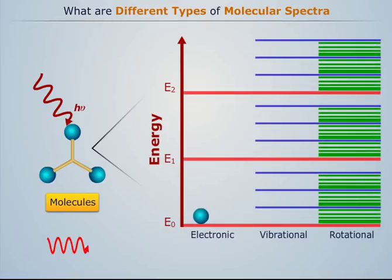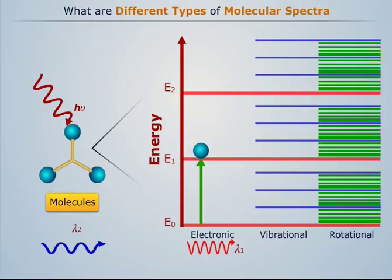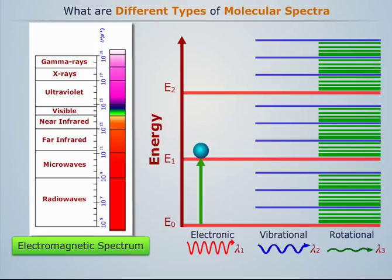Molecules absorb certain wavelengths to be excited to higher electronic, vibrational, or rotational energy levels. The series of wavelengths absorbed in each case gives a distinct molecular spectrum, which lies in a specific region of the electromagnetic spectrum.